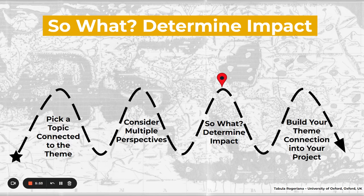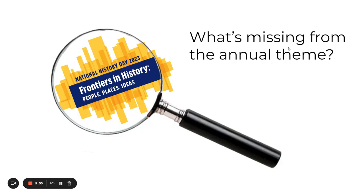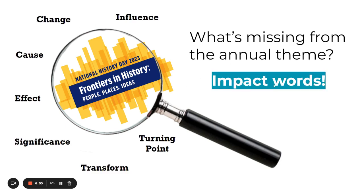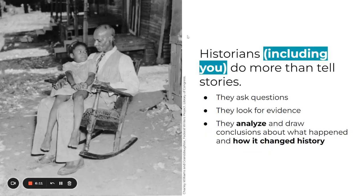What determines impact? This is one of the most important parts — the so-what test. What's missing from the annual theme are impact words: influence, change, cause, effect, significance, transform, turning point. These are all missing from the theme, so we have to look for those in our research.